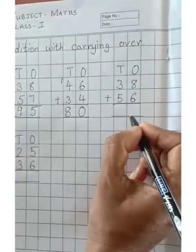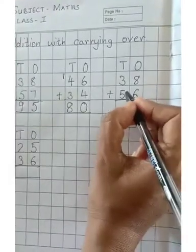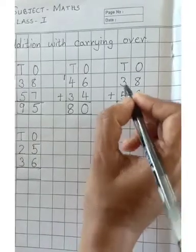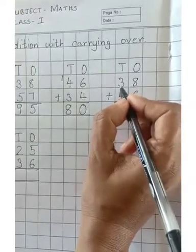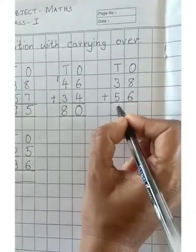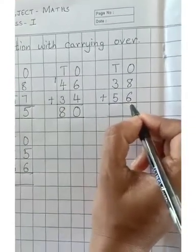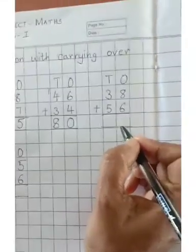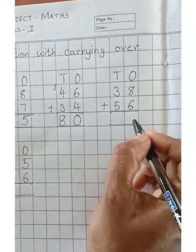I will show you another sum. 38 plus 56. 3 is in the tens place and 8 is in the ones place. Plus 5 is in the tens place and 6 is in the ones place. So 8 plus 6 gives you 14.